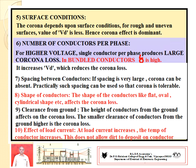Next: surface conditions. The corona effect also depends on the surface conditions of the conductor. If the surface is rough or uneven, the value of Vd is less; once the value of Vd is less, the corona effect is dominant or more. Number of conductors per phase: for higher voltage, a single conductor per phase produces larger corona loss. In bundled conductors, the air density factor is high, which increases Vd and hence reduces the corona loss.